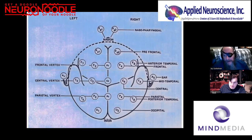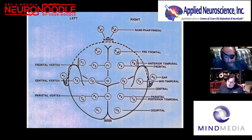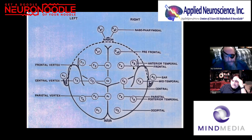F for frontal. The frontal lobe has all those F-labeled electrodes up there — not because they failed, but because F stands for frontal. F with odd numbers are left side, even numbers are right side, and Zs are at the midline.